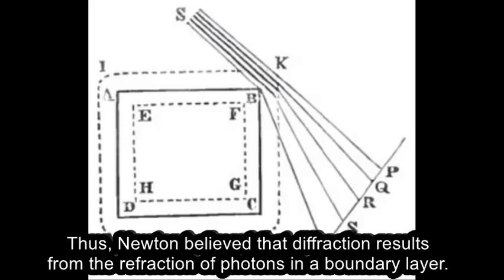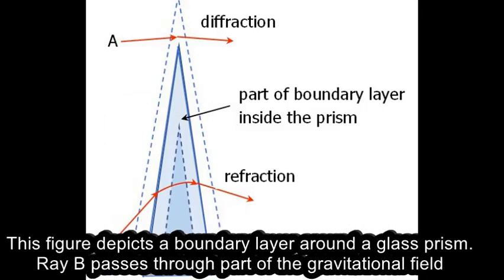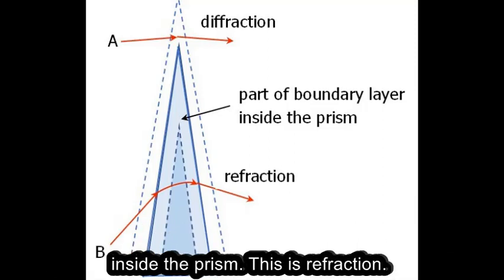Thus, Newton believed that diffraction results from the refraction of photons in a boundary layer. This figure depicts a boundary layer around a glass prism. Ray B passes through part of the gravitational field inside the prism. This is refraction.